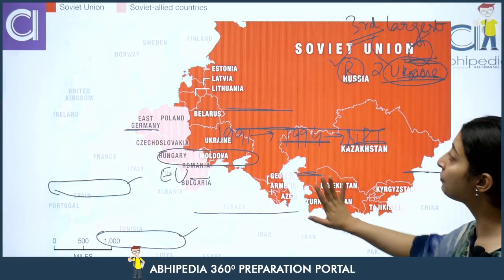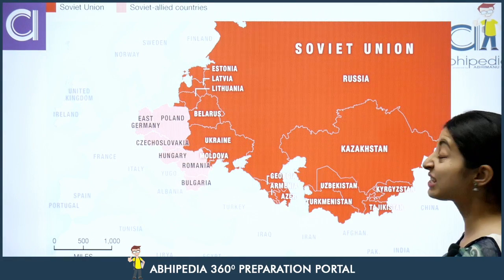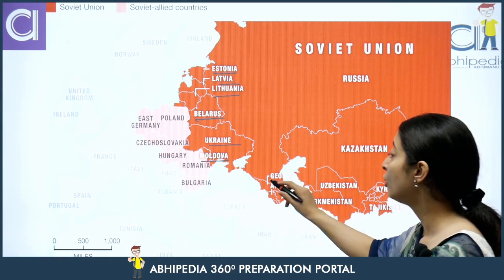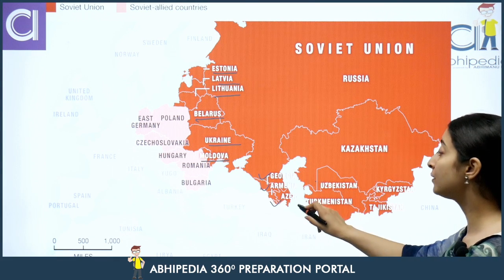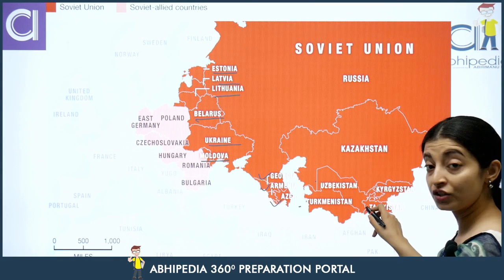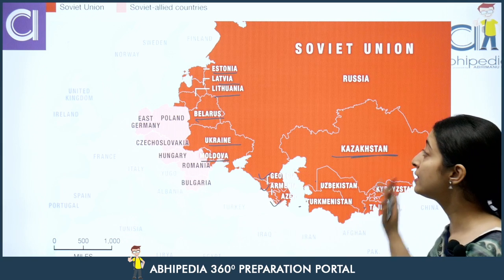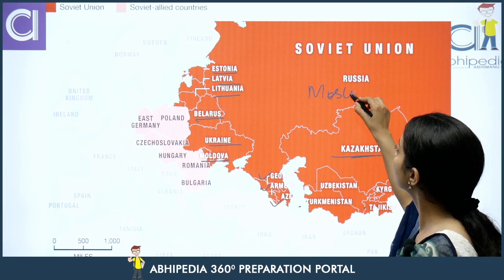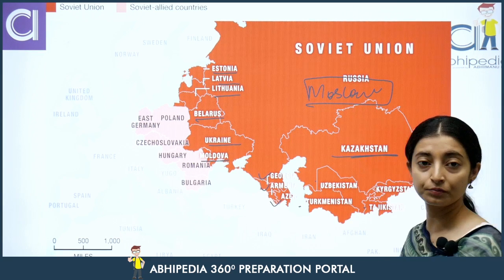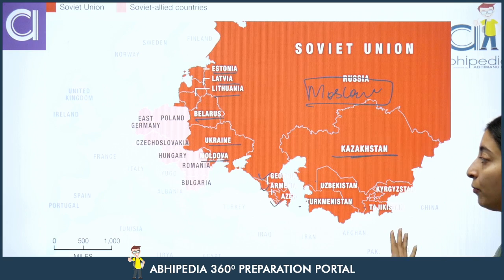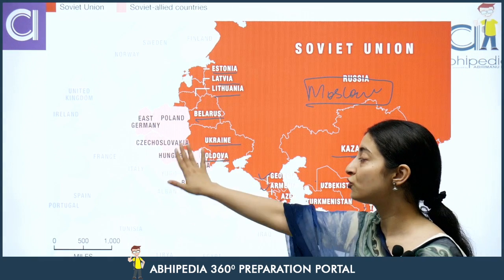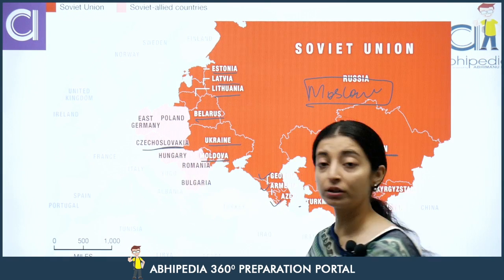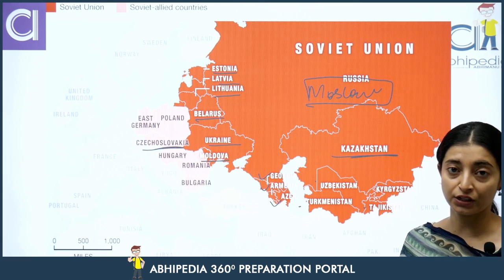Let's look at the map of the Soviet Union. Parts of the Soviet Union included Ukraine, Moldova, Belarus, Lithuania, Estonia, Latvia, Georgia, Armenia, Azerbaijan, Uzbekistan, Turkmenistan, Kyrgyzstan, Tajikistan, and Kazakhstan — with headquarters in Moscow. Nations like East Germany, Poland, Czechoslovakia, Hungary, Romania, and Bulgaria were Soviet-allied countries.